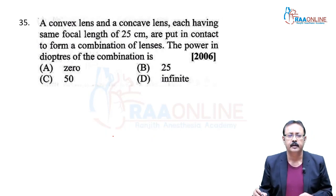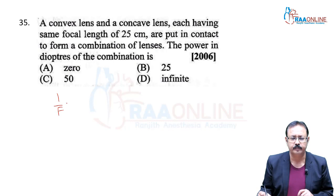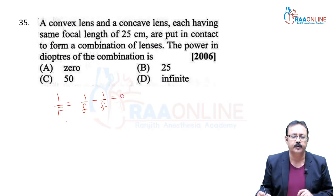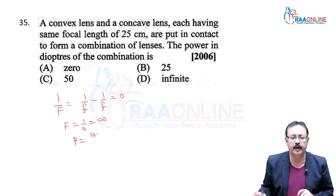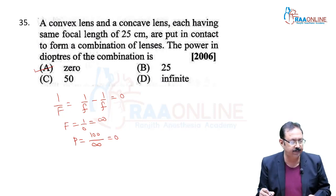Problem 35, from 2006. A convex lens and a concave lens each having the same focal length are placed in contact. Since focal lengths are equal but opposite in nature, the combined focal length becomes infinity. Power = 100/F = 0. We go with option A, 35A.